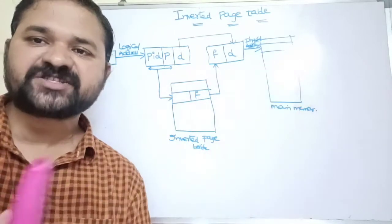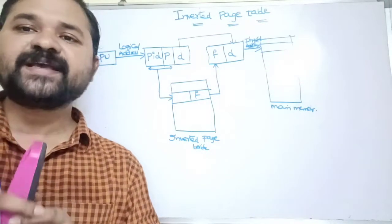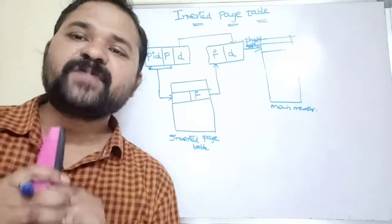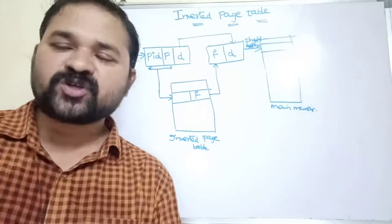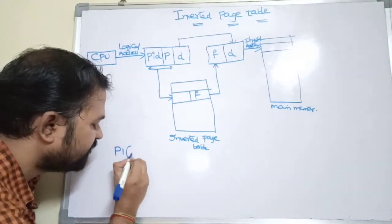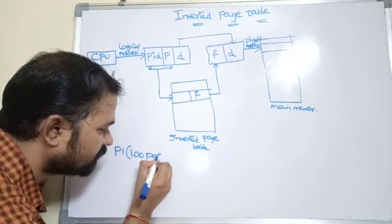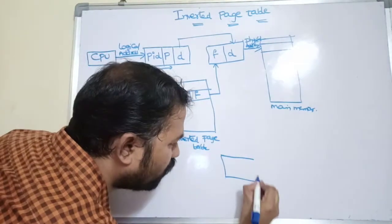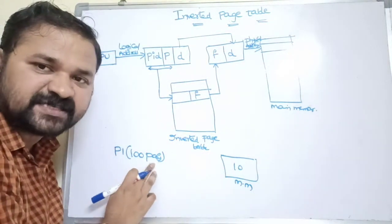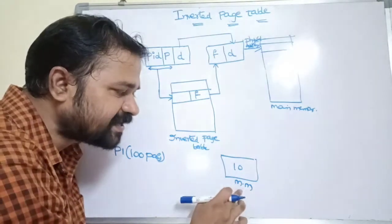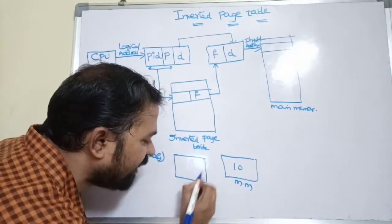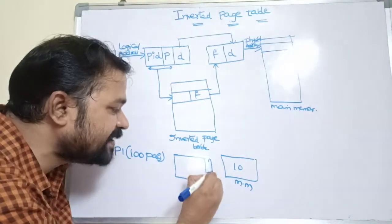Now let's look at inverted page tables. An inverted page table is mainly useful when you want to store lakhs of entries inside a page table. Generally, each process has its own page table. Consider process P1 which contains 100 pages, but assume that only 10 pages are available in main memory. Even so, the page table must contain all 100 pages' information.